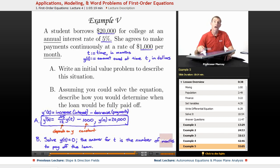you would solve y of t is equal to 0, because you're trying to figure out what time it would be when she owes $0. And then whatever you get for t, you would say it's going to take that many months to pay off the loan.